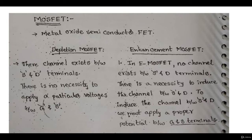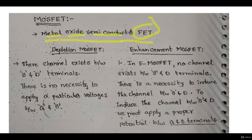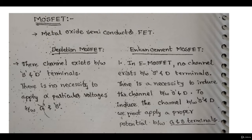Let's look at MOSFETs. MOSFET stands for Metal Oxide Semiconductor Field Effect Transistor — it's a FET but with a metal layer, then an oxide layer, and then a semiconductor layer. The oxide sits in between the metal and semiconductor. This kind of FET is called a MOSFET, and there are two types of MOSFETs.